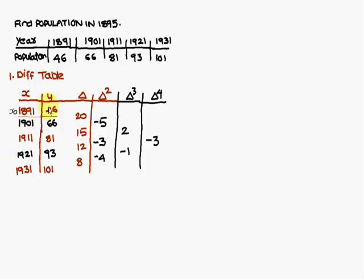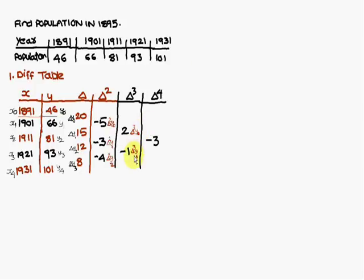Next we need to name the data. The first year 1891 is considered x0, then x1, x2, x3, and x4. Similarly, 46 is named y0, and correspondingly y1, y2, y3, y4. The first differences are named delta y0, delta y1, delta y2, delta y3. The second differences are delta squared y0, delta squared y1, delta squared y2. Then delta cubed y0, delta cubed y1, and delta to the power 4 y0.